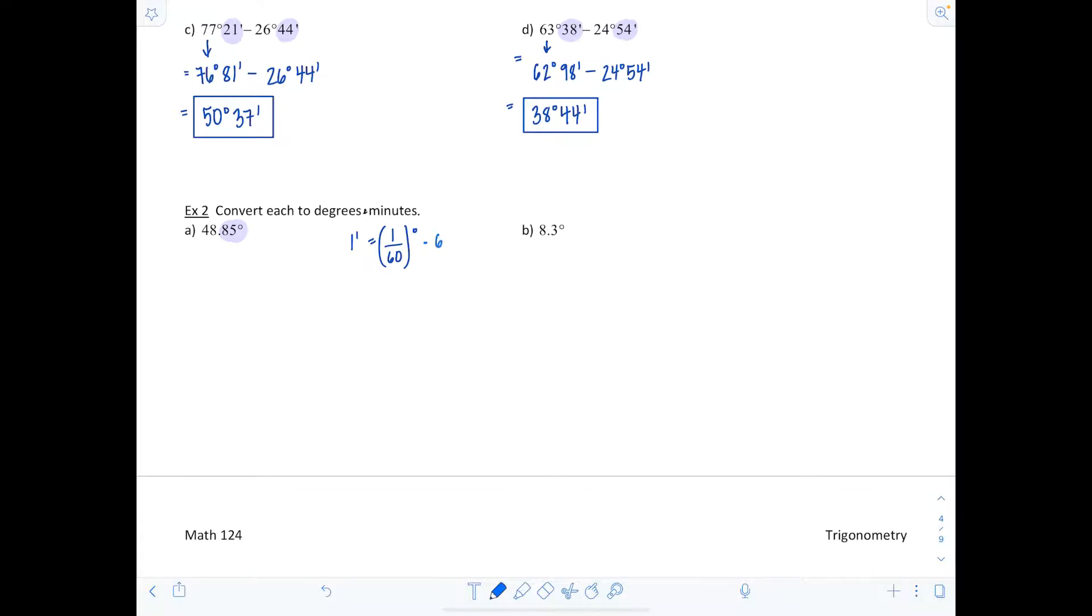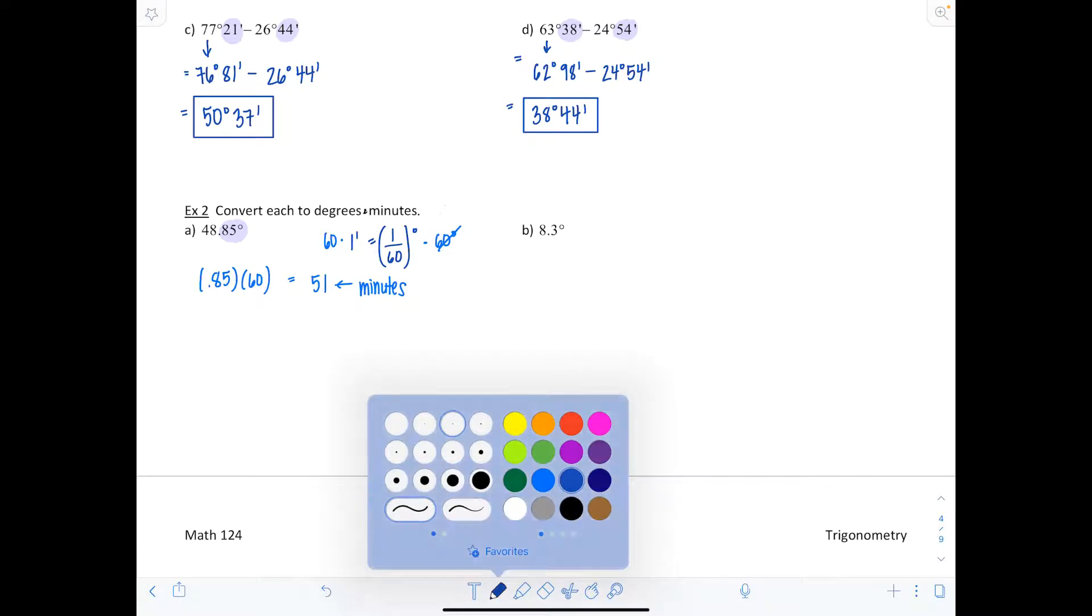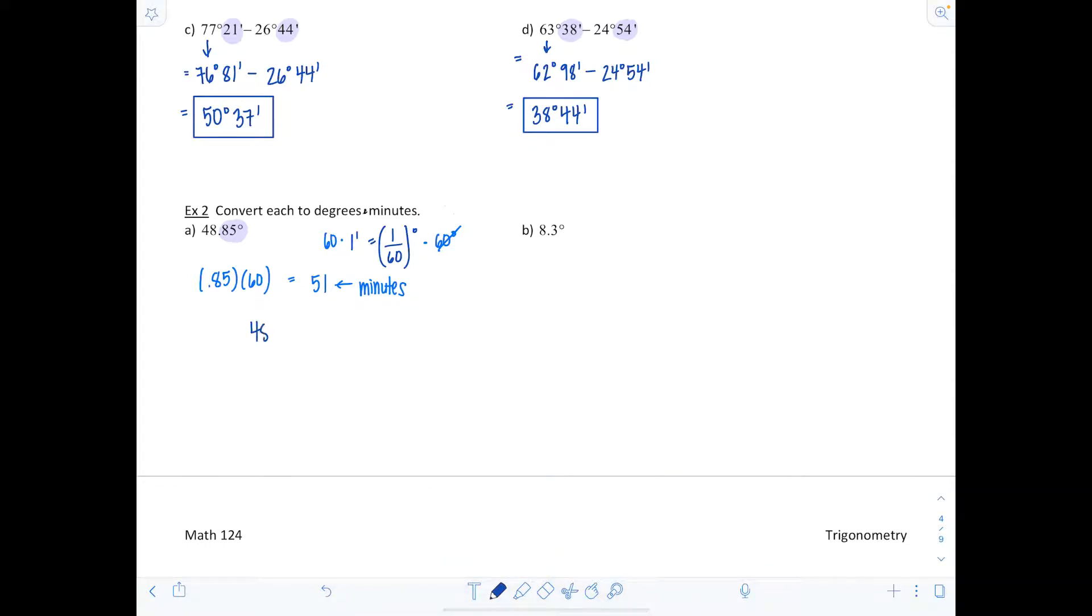So whatever decimal portion we have, we're gonna multiply by 60 in order to end up with the minutes. It's kind of like canceling out the denominator. We're gonna take 0.85 multiplied by 60, and it's fine if you need your calculator for this, and we get 51 and that's in minutes. Now I'm gonna put together everything for our final answer. We have 48 degrees and 51 minutes.